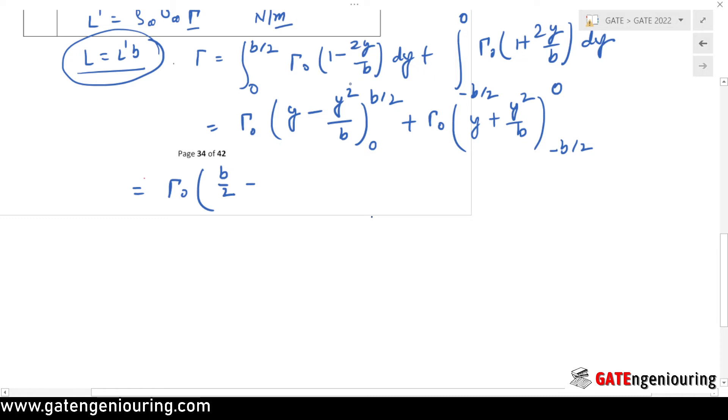You can see that the upper limit is b/2, so replace that here. b²/4 minus b²/4 into b gives me b/4. The second limit is 0, so here also y, here also y, it will be 0, so I am not writing here. Now move to this side.